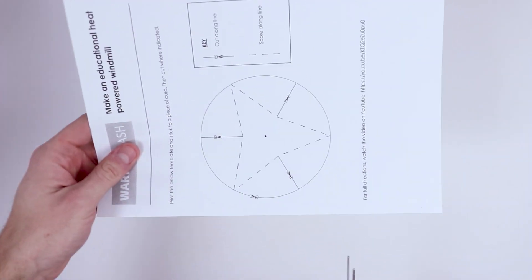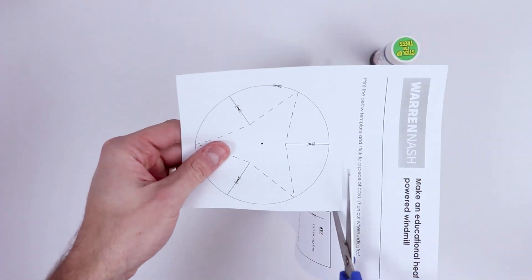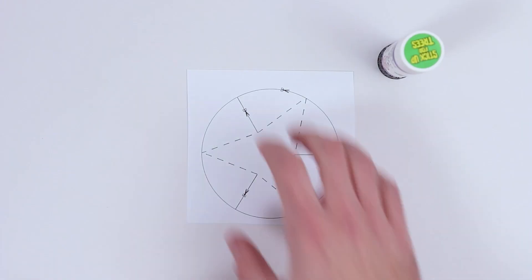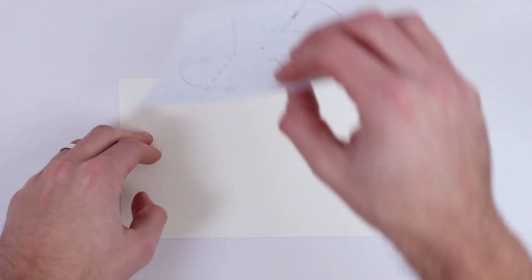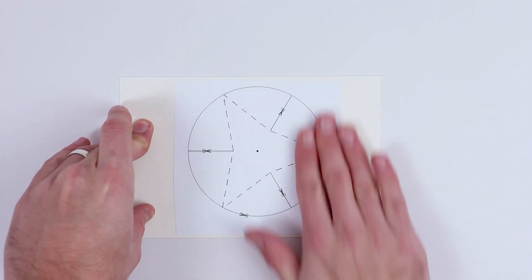Next, you'll need to cut a square around the circle on the printed template. Now take a thick piece of card and glue the underside of the circle we cut out.